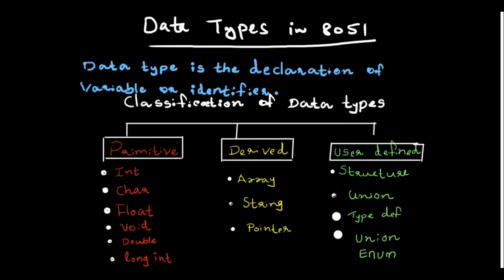In primitive data types we have int, char, long int, double, float, and others. When we write code for 8051 or a microcontroller, we will generally use int and char. The higher-level types we use at higher levels, but basically we need int and char. Derived data types include array, string, pointer. User-defined types include structure, union, and enum — the enumerated data type.